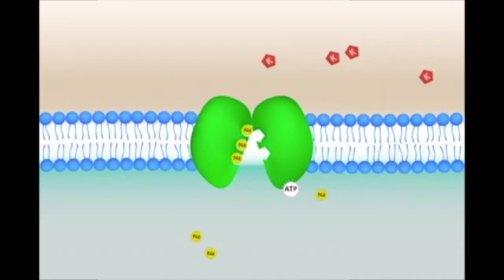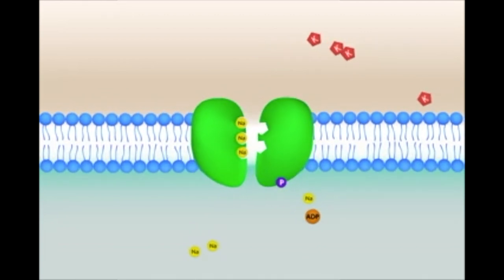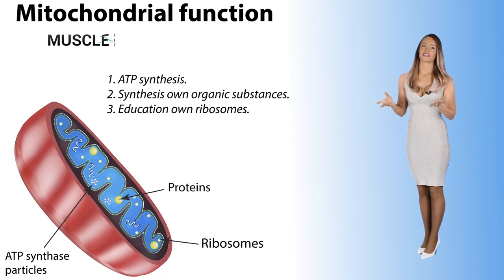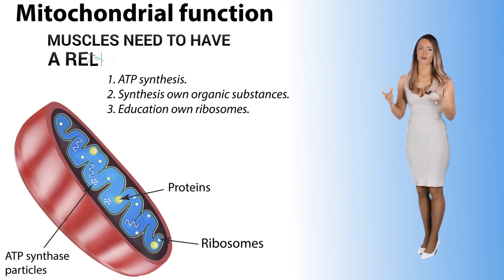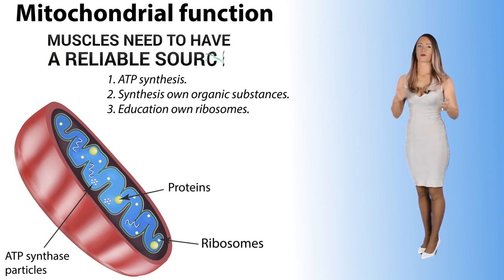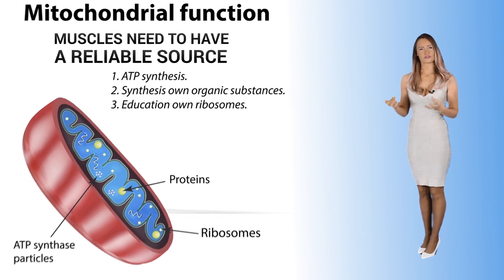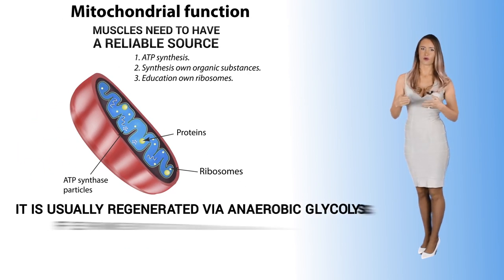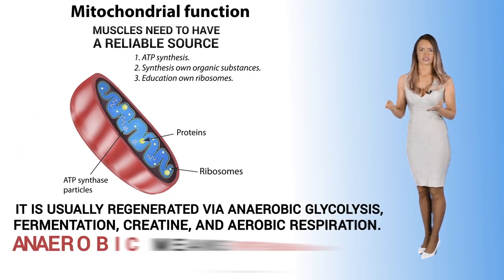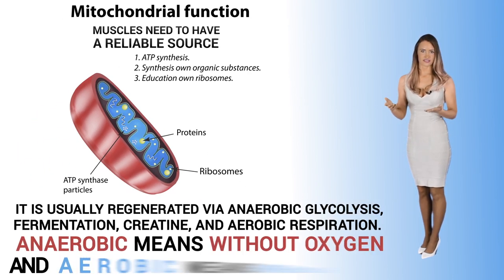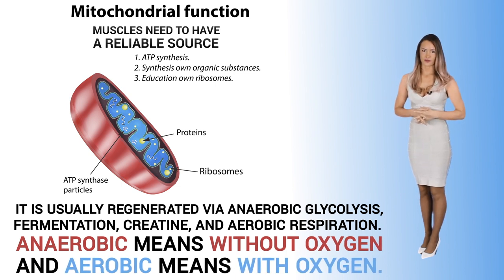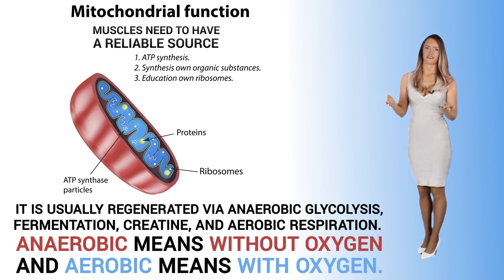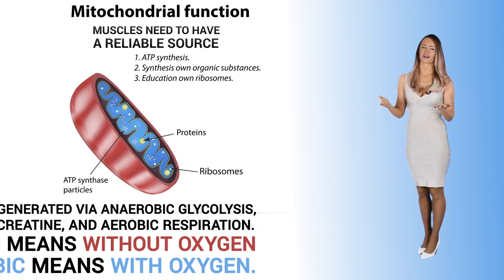With the high consumption of ATP, muscles need to have a reliable source of it, and no contraction can occur without proper and sufficient ATP. It is usually regenerated via anaerobic glycolysis, fermentation, creatine, and anaerobic respiration. Anaerobic means without oxygen, and aerobic means with oxygen.